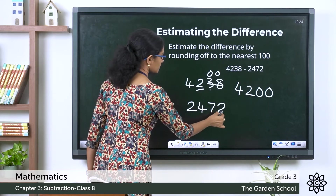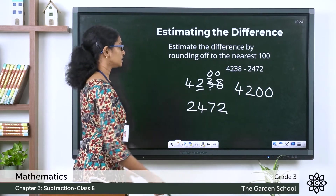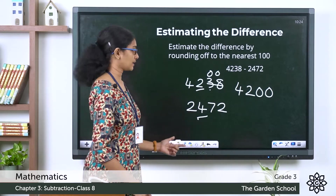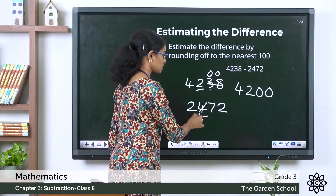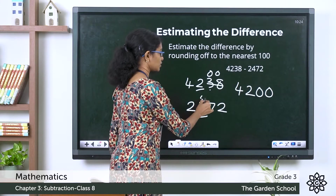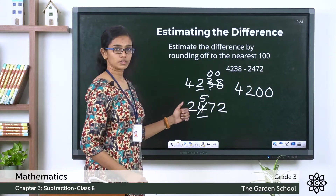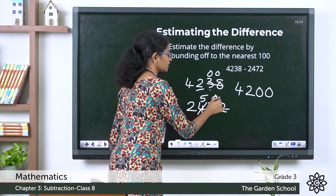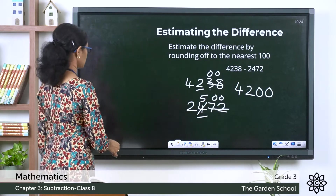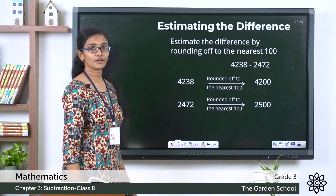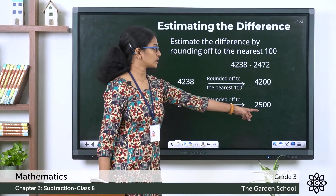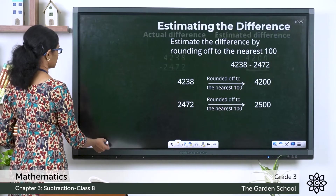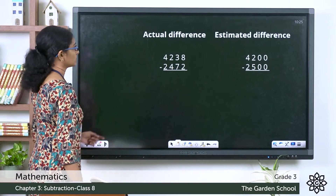The subtrahend is 2472. The hundreds digit is 4; to the right of it we have 7, which is more than 5, so we add 1 to the rounding digit, making it 5, and the digits to its right become zeros. So the rounded value of 2472 to the nearest hundred is 2500.